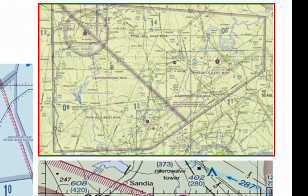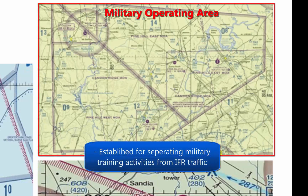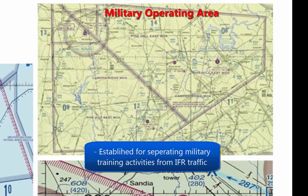The right top picture shows a military operating area. These areas are established for the purpose of separating certain military training activities from IFR traffic. During operations, non-participating IFR traffic may be cleared through a military operating area if IFR separation can be provided by air traffic control.